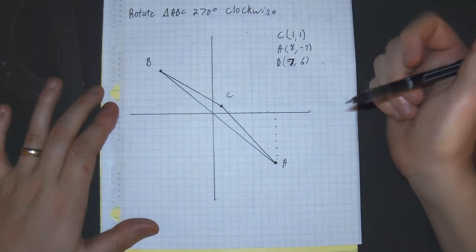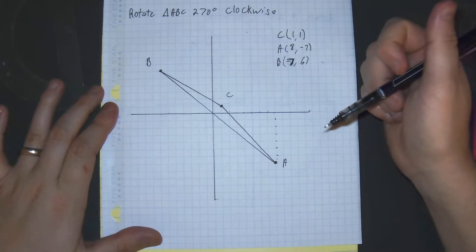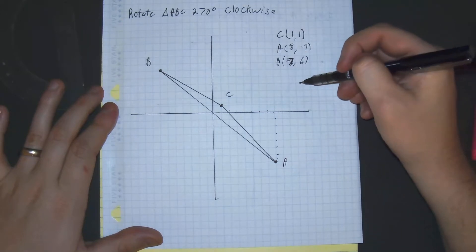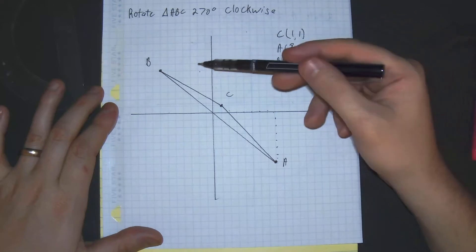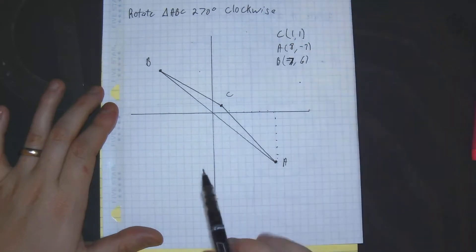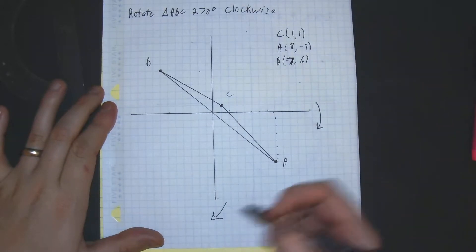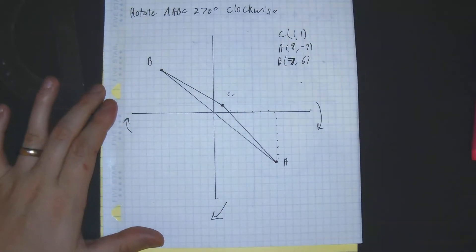We're doing a 270 degrees clockwise rotation. That means we're going to be going through three quadrants. So A should end up in quadrant one, C should end up in quadrant two, and B should end up in quadrant three. It's going to be in this direction. We're rotating our paper three times to represent this clockwise rotation.